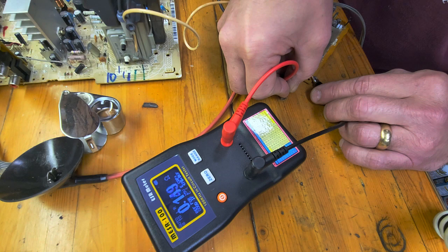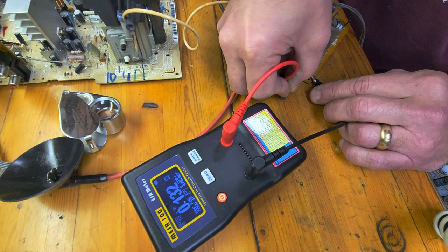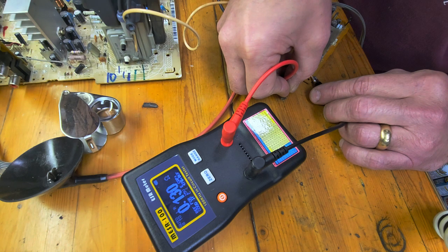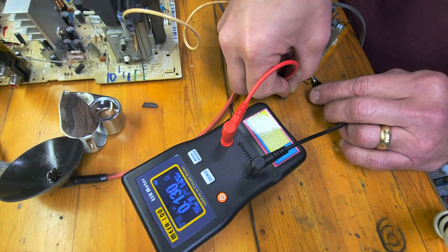Right, but for the 16 volt one it's 0.18 ohms, and this is 0.13 ohms. So this is a good capacitor. And visually it looks good as well. Doesn't look like it's popped or swollen or anything leaking out of the bottom.